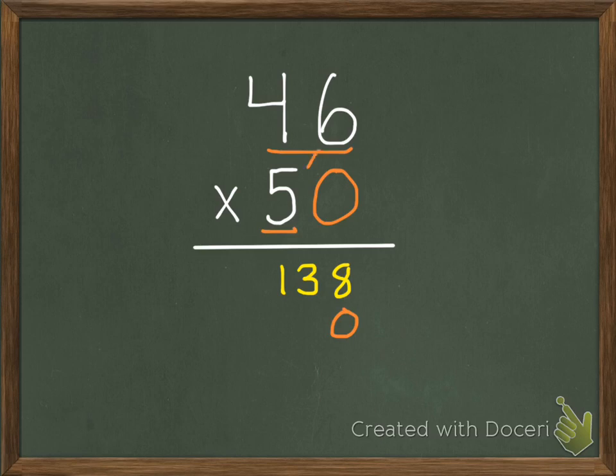So 5 times 6 equals 30. I'm going to put our 3 up above, our 0 down below. Now 5 times 4 equals 20, plus our 3 extra, gives us 23.